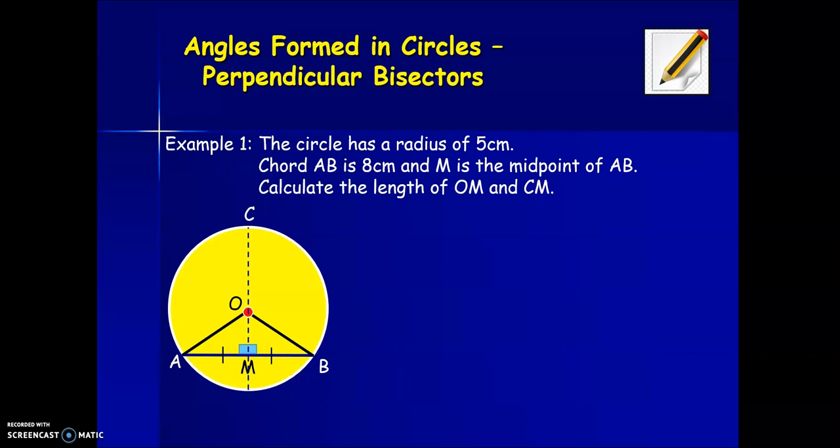So let's look at an example. Here we have a circle with a radius of five centimeters. Chord AB is eight centimeters long and M is the midpoint of AB. That just means the halfway point. We are being asked to calculate the length of OM and CM. If we look at the diagram, the dotted line CM passes through the center. So this means the dotted line is a diameter. And any line from O to the circumference is a radius. Therefore, the dotted line is a perpendicular bisector.